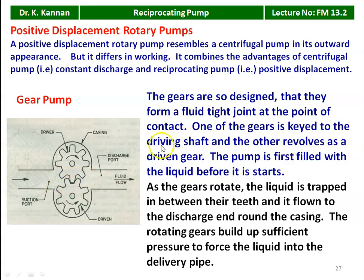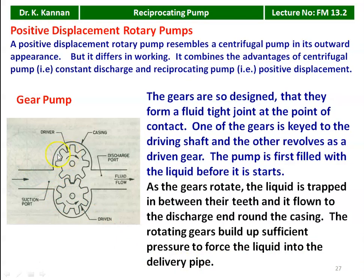One of the gears is keyed to the driving shaft connected to the motor; the other revolves as a driven gear. The pump is first filled with liquid before it starts. As the gears rotate, the liquid is trapped between the teeth and flows to the discharge end around the casing. The liquid is compressed in the gap between the teeth and the casing, and the high-pressure liquid is delivered on the other side. The gear pump is normally used for pumping high-viscosity liquid.